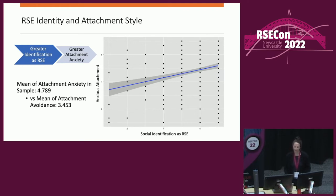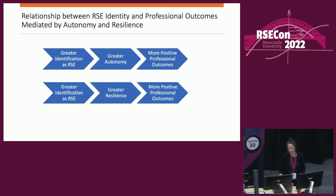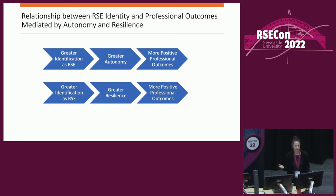In terms of attachment style, RSEs tended to be higher in attachment anxiety relative to attachment avoidance — in other words, a greater tendency to orient towards rather than away from threat. Identifying more as an RSE predicted a greater level of attachment anxiety. We also found that greater attachment anxiety predicted greater resilience across abilities, whereas greater attachment avoidance only predicted greater learning. We looked at mechanisms of how identifying more as an RSE led to more positive professional outcomes, and found that relationship was mediated by both greater autonomy and greater resilience, such that identifying more as an RSE predicted greater autonomy, greater resilience, and each of those in turn predicted more positive professional outcomes.